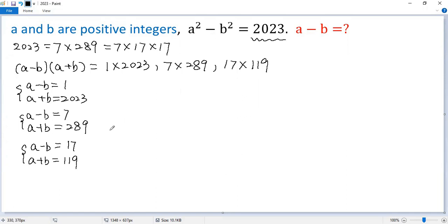Let's check one by one if they are possible. So for the first case, add these two equations together. The left side becomes 2a, negative b plus b equals 0. The right side, we get 2024. Both sides divided by 2, so we get a equals 1012. Then plug in to the first equation, we get b equals 1011.